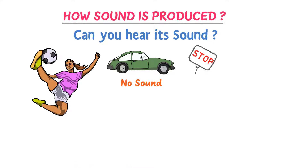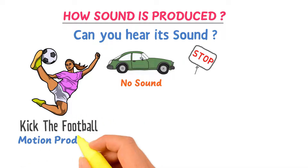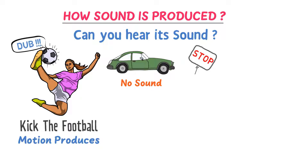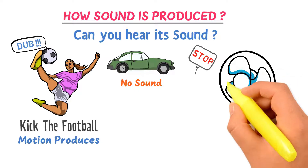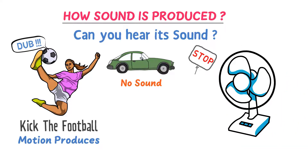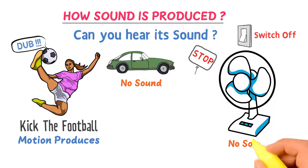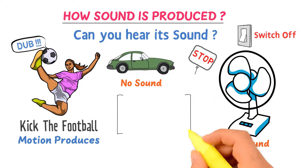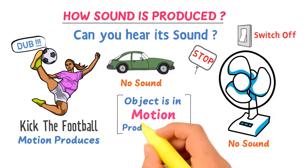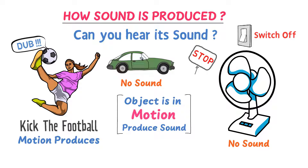Secondly, consider kicking a football. When you kick the football, the motion produces an impact and you hear the thud sound coming out of the football. Thirdly, consider the motion of a fan. When it is in motion you hear the sound coming out of its blades. When you switch it off, the fan comes to rest and no sound is produced. Thus, from all these examples we learn that when an object is in motion it produces sound.